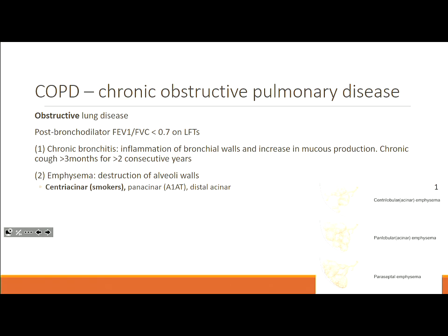Starting with COPD — just very briefly to refresh you. It's an obstructive lung disease. The main thing you need to know for diagnosis is that on lung function tests you have an FEV1/FVC ratio of 0.7 or under. There are a few definitions: chronic bronchitis versus emphysema. In GP, you'll primarily be looking at people with centrilobular emphysema and chronic bronchitis, as that's mainly related to smokers and people who have damaged their lungs over their lifetime.